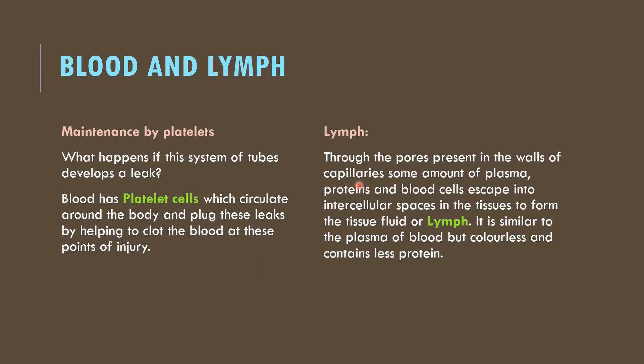Capillaries have very thin, one-cell-thick walls for exchange of materials. During this exchange, some plasma proteins and blood cells escape into the intercellular spaces, forming a tissue fluid called lymph. This lymph drains into lymphatic capillaries from the intercellular spaces, which join to form large lymph vessels that finally open into larger veins. Lymph carries digested and absorbed fat from the intestine and drains excess fluid from extracellular spaces back into the blood. When there is any rupture in a blood vessel, platelet cells circulate and plug these leaks by helping to clot the blood at the point of injury.